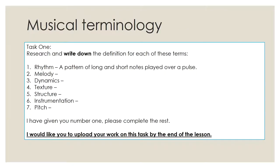For task number one, I'd like you to research and write down the definition of each of these terms. I've already given you term one — rhythm — which is a pattern of long and short notes played over a pulse. You've still got six more to do: melody, dynamics, texture, instrumentation, and pitch. Please make sure you understand what you're writing for each of these terms — don't just copy and paste from Wikipedia. Make sure you understand what you're writing before you put it down, because you need to understand the term, not just have an answer for it.